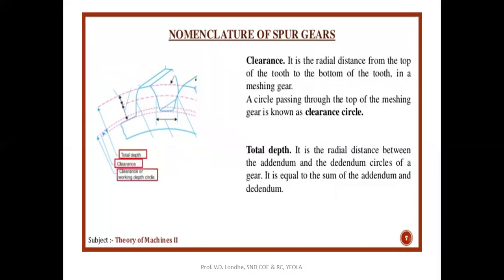Clearance is the radial distance from the top of the teeth of one mating part to the bottom of the teeth of the mating gear. The circle passing through the top of the mating gear is the clearance circle. Clearance is needed to prevent removal of material from the bottom part of the teeth — if the top of one tooth enters too deep, there will be digging or removal of material from the bottom of the mating tooth.